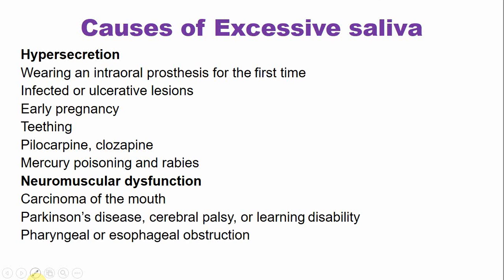Pharyngeal or esophageal obstruction — whether non-cancerous or caused by cancer or neoplasia — also causes impaired swallowing, which appears like there is excessive saliva production.